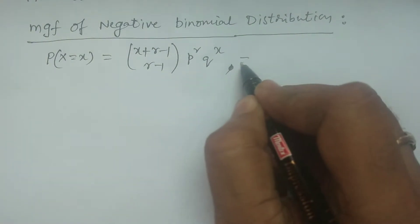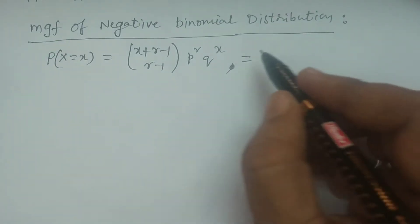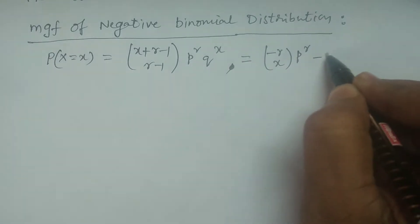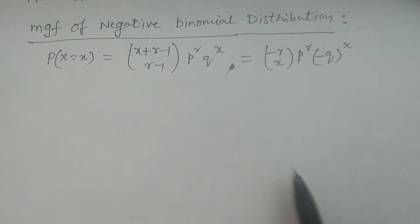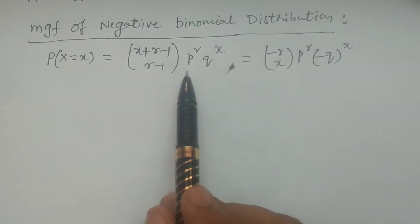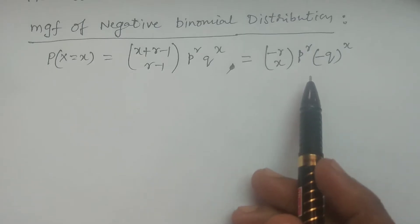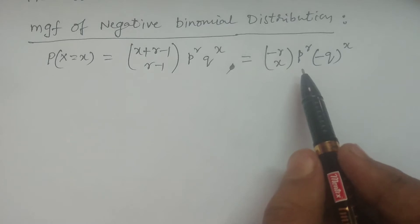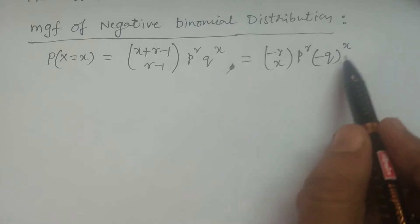This can also be expressed in another form. That is: (−r C x) times p to the power r times (−q) to the power x. If you convert the first form, you can obtain this another form of the negative binomial distribution probability mass function, which is (−r C x) times p to the power r times (−q) to the power x.